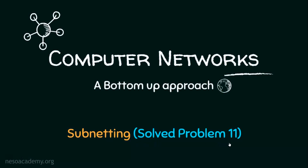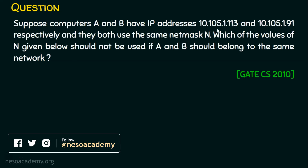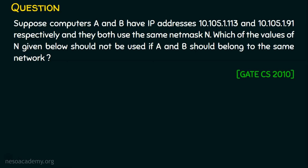Let's now see solved problem number 11 in subnetting. The question is: suppose computers A and B have IP addresses 10.105.1.113 and 10.105.1.91 respectively, and they both use the same subnet mask N. Which of the values of N should not be used if A and B should belong to the same network? This question was asked in GATE computer science in the year 2010.